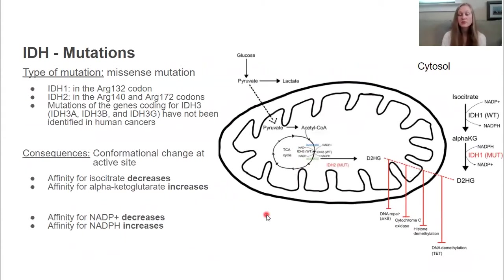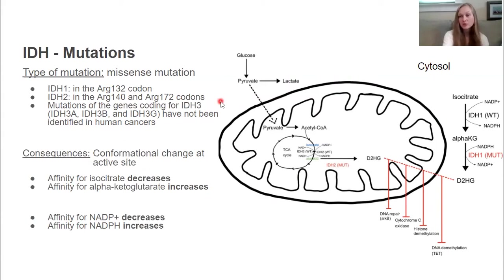Mutations of these enzymes are most commonly missense mutations. For IDH1, the mutation is most commonly at the arginine-132 codon. For IDH2, it occurs at the arginine-140 or arginine-172 codons. For IDH3, no mutations in the genes coding for this enzyme have yet been identified in human cancers, which is why we will only focus on IDH1 and IDH2 mutations.